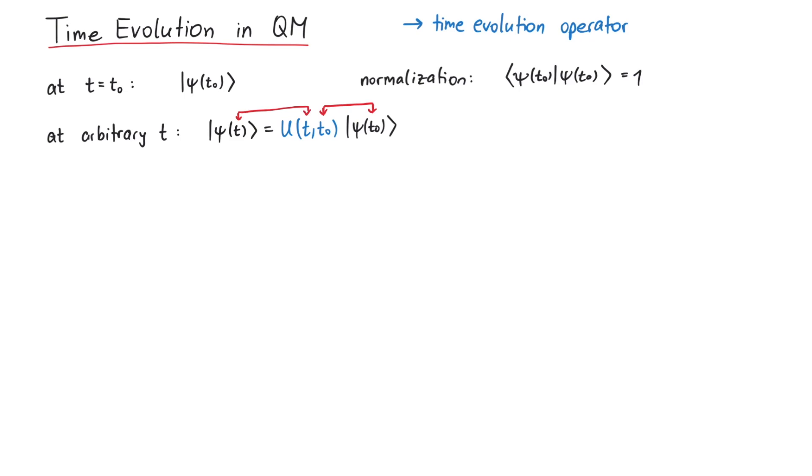Since we want the state at a later time to be normalized as well, we see that u dagger u must be the identity operator, or in other words, u has to be a unitary operator.